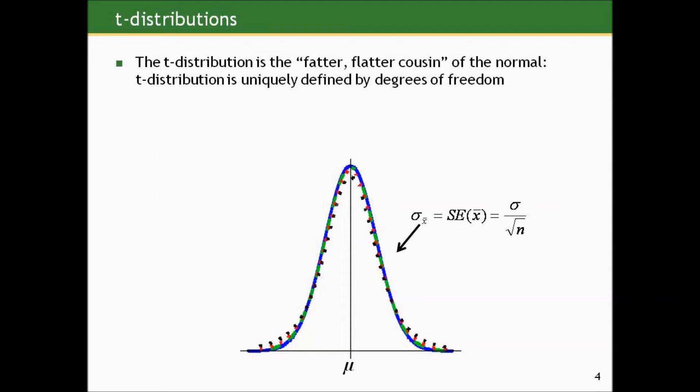It kind of looks like a normal curve that somebody stepped on. A T curve, unlike the normal — which is uniquely defined by its mean and standard deviation — is uniquely defined by something called its degrees of freedom. The smaller the degrees of freedom, the wider the T curve tails are. Here I have a normal curve, and the dotted curves represent two different T curves with differing degrees of freedom. The lesser the degrees of freedom, the longer the tails get relative to that of the standard normal — but for all intents and purposes, it looks almost identical to a standard normal in most cases.